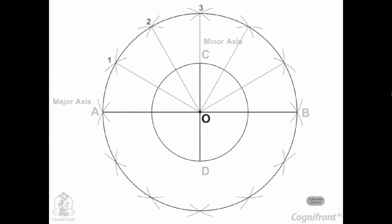Draw lines joining these points with the center O and cutting the minor axis circle at points 1', 2', etc.